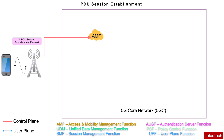The AMF then determines whether the message coming from the UE is for a new PDU session, or whether there is already a PDU session with a similar ID already enabled. If the NAS message does not contain slice information, the AMF will determine the appropriate slice for the requested PDU session based on the UE subscription or the operator settings for that particular user.